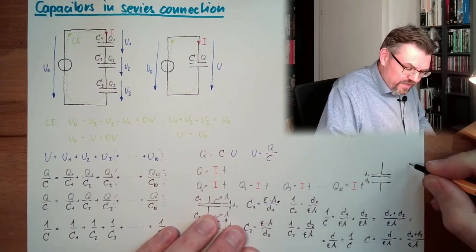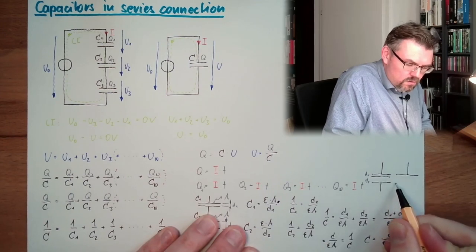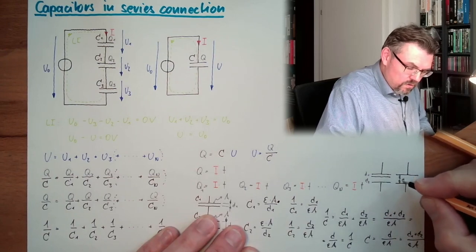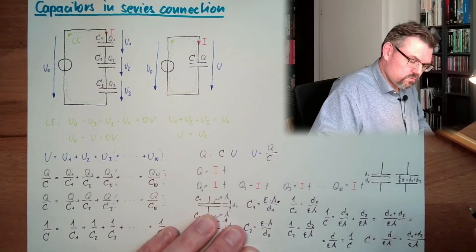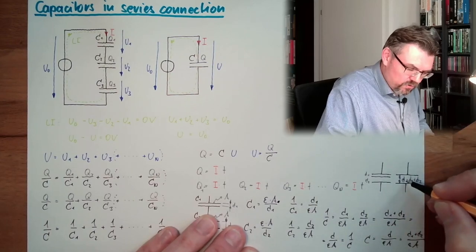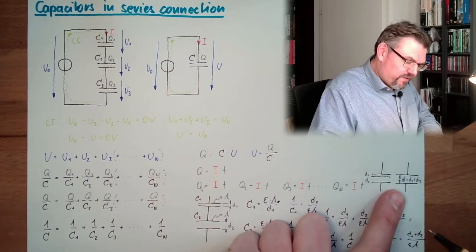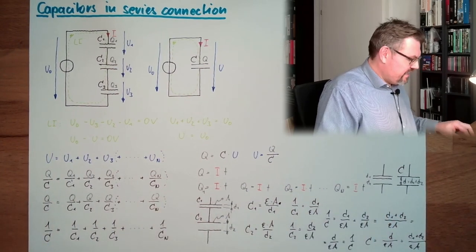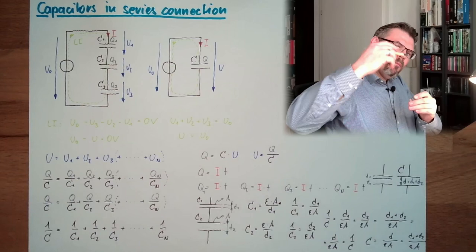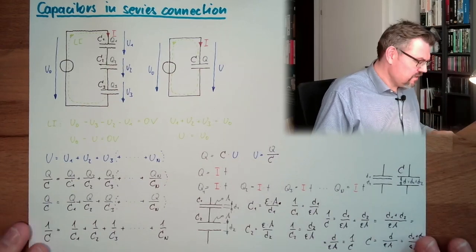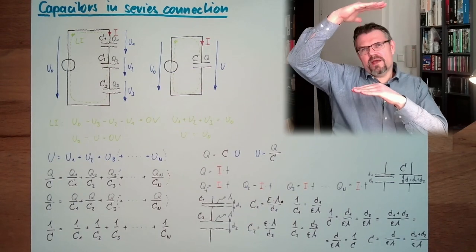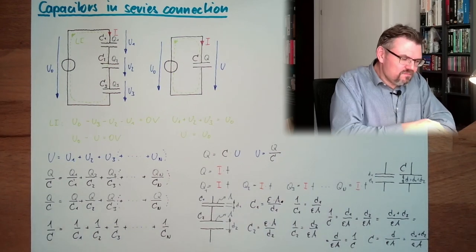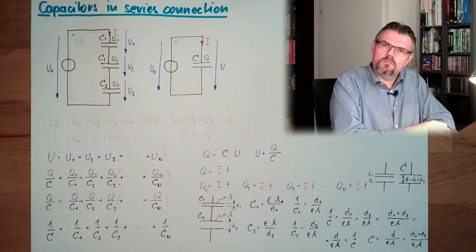So we have here d1 and here d2. And this is acting like 1 capacitor with a distance of d, which is d1 plus d2. I'm really small now, writing really small. I hope you can read this. So here we have our c. This is c1 and c2. It's acting like the two plates would be further apart. This is actually what is happening. And the further apart the two plates are, the less capacitance is by this capacitor.